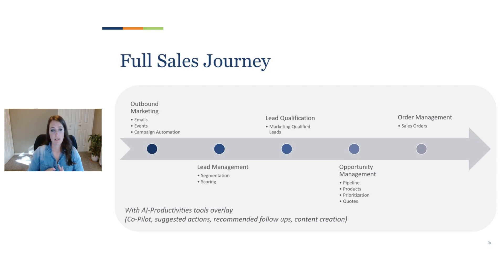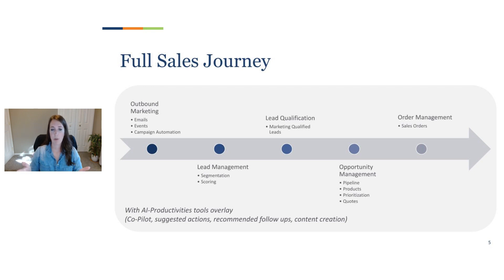Within the opportunity phase — or series of phases — you have pipeline management, products, different quotes, and prioritization. Depending on your business process flow, you could go into order management with sales orders, and somewhere along the line you'll win the opportunity and have the sale. What's great is that Microsoft provides all of this with AI productivity tools on top, so you're going to get things like Copilot, suggested actions, recommended follow-ups, and different content creation recommendations — making it a really robust tool, far more than just a CRM solution.